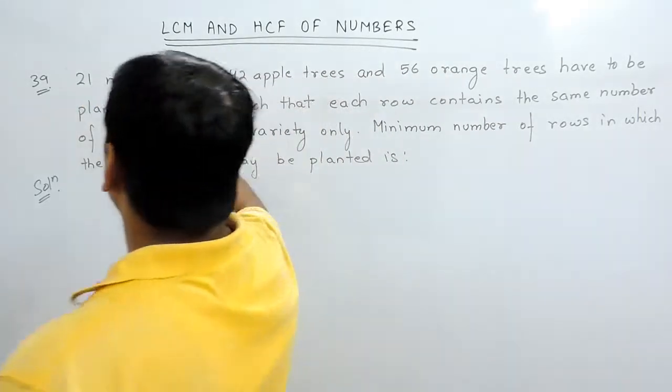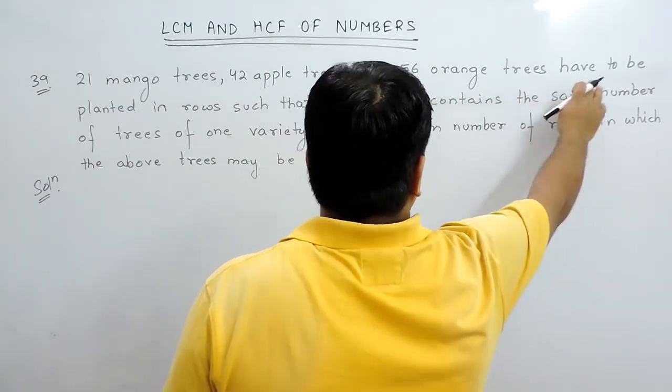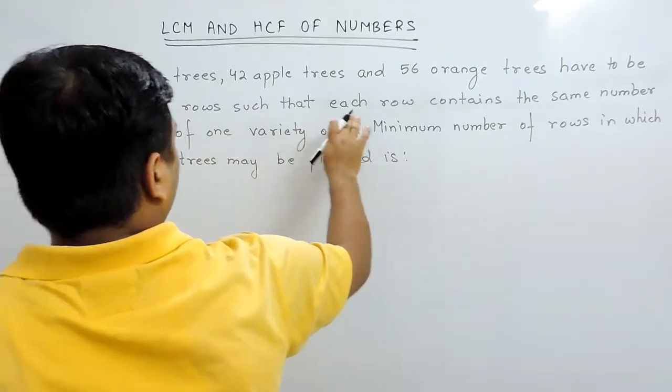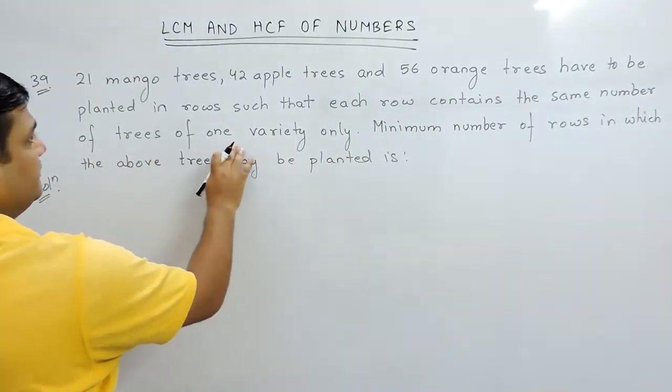The question is: 21 mango trees, 42 apple trees and 56 orange trees have to be planted in rows such that each row contains the same number of trees of one variety only.